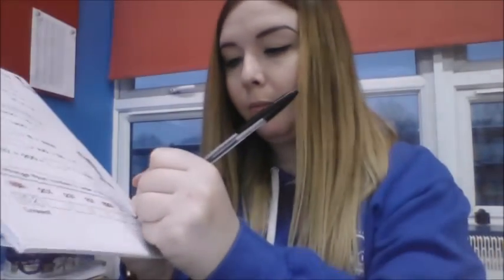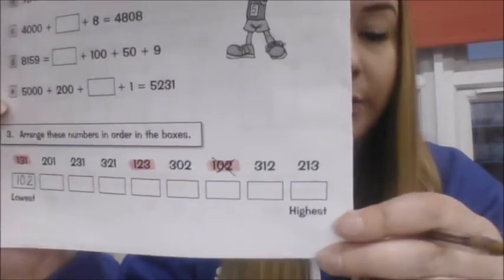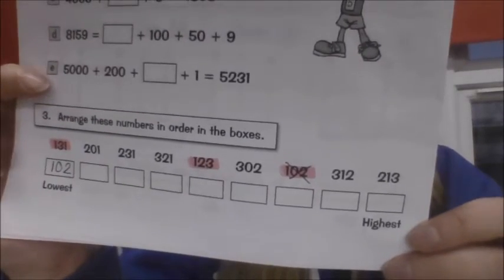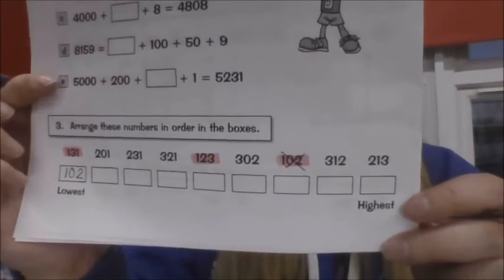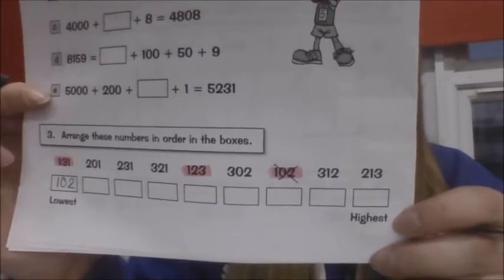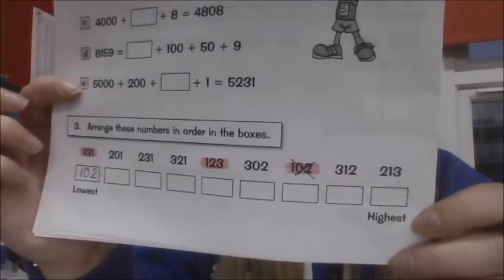And then, so I don't forget that I've used it, I'm going to cross that number off. Put a little cross through it so I know I've already done that one. And then I'll look through my other highlighted numbers to put them in order. And then once I've done them and crossed those out, I'll then look for any numbers that are in the two hundreds. And keep going until I've finished.